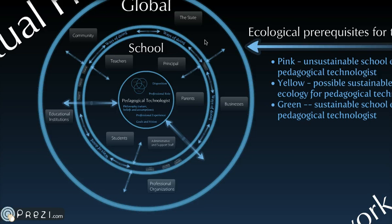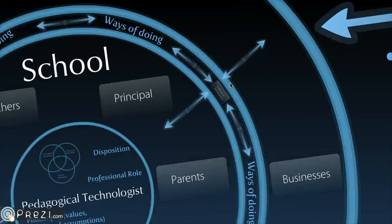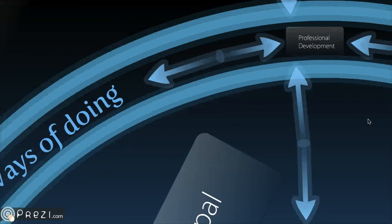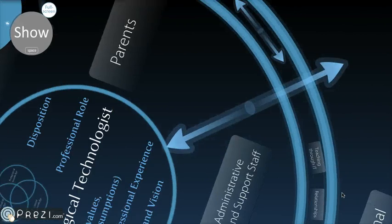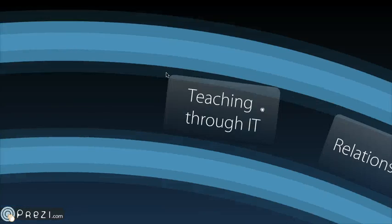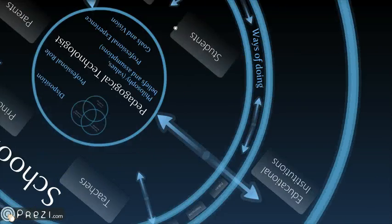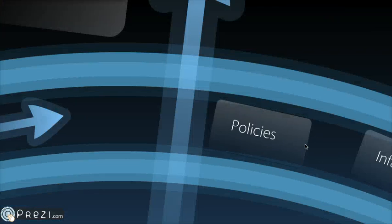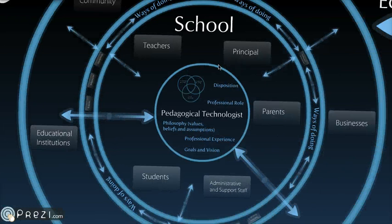And they're environed by abiotic species, what I call ways of doing. And these ways of doing, these abiotic species, include professional development, teaching through IT, relationships, shared vision, and what else do we have here? Policies, infrastructure, and leadership. So these are the biotic and abiotic species.